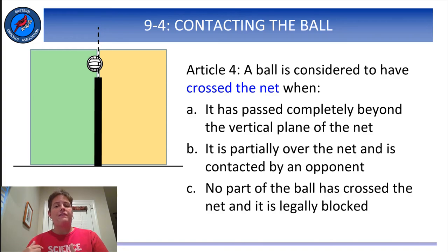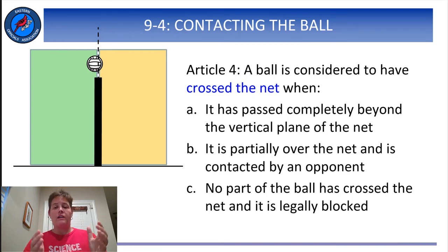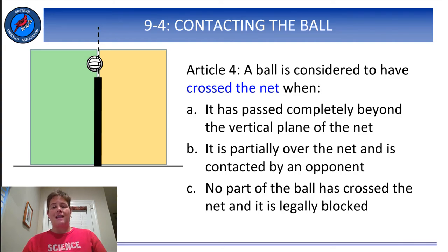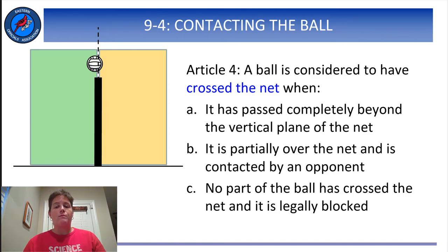Article 3 states that each team gets only three hits before the ball crosses the net. Article 4 defines what the term 'crosses the net' means. The illustration shown is a diagram looking at the court side on — the large black bar is the pole, and the white space and dashed line represent the vertical plane of the net. The ball is round and much wider than the vertical plane of the net, and that's important to remember when making judgments involving the location of the ball relative to the net.